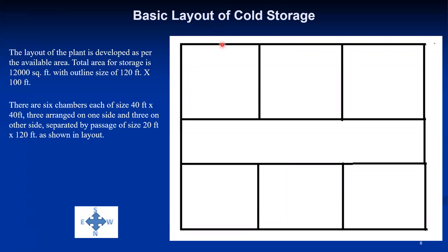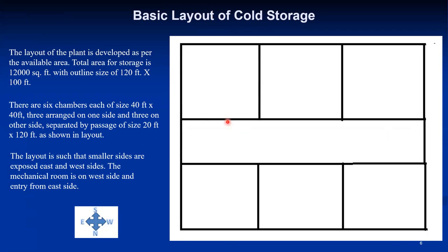As per the orientation, it is recommended to have the larger side facing north and south, and the smaller sides facing east and west. The passage is provided on one side for entry, and on the other side mechanical equipment of the refrigeration system can be installed. Each chamber is of size 40 feet by 40 feet. The mechanical room is on the west side and the entry is from the east side.